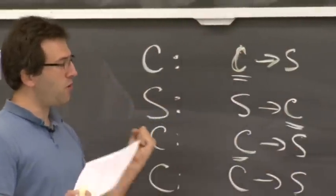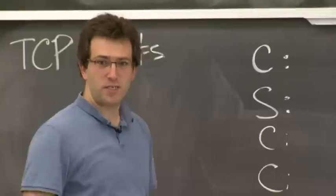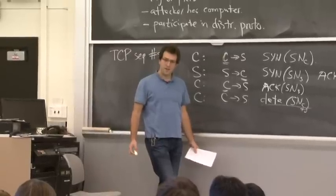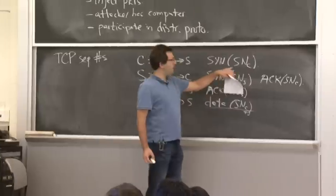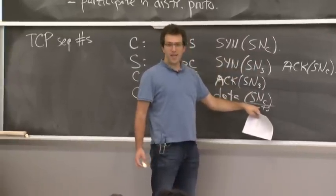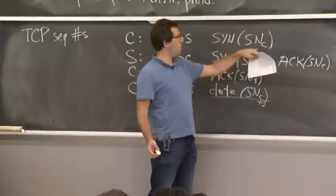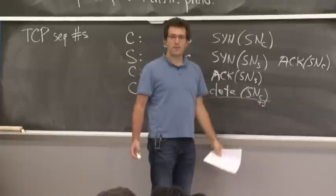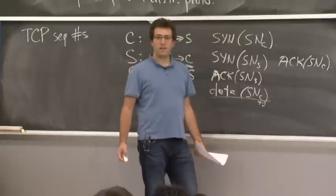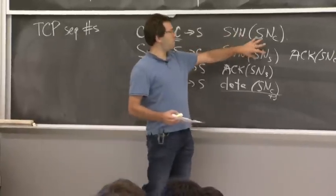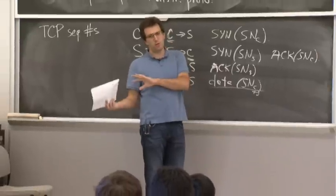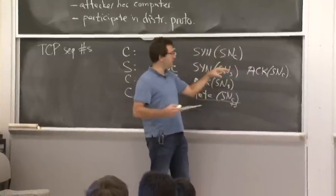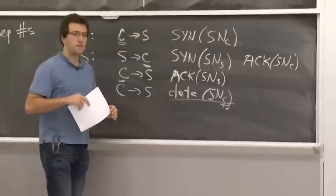The TCP designers really wanted these sequence numbers to progress in a roughly monotonic manner over time, even across connections. If you open one connection with the same source and destination ports and IP addresses, packets from earlier connections hopefully won't match up with the sequence numbers for the new connection. This was a mechanism to prevent confusion across repeated connection establishment. Within a connection, once established, the sequence numbers are fixed and tick along as data is sent.